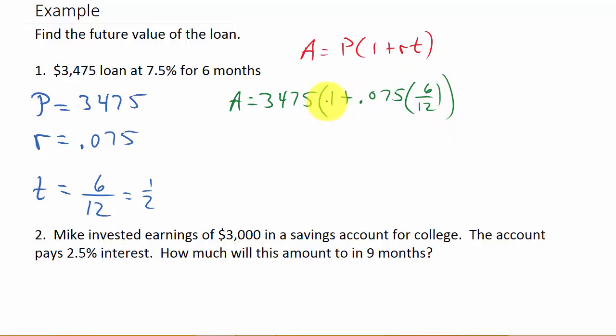And now just hit times, and then the 3,475. And hit equals, and so that would be $3,605, and round it to two decimal places, 31 cents. And there's your answer.